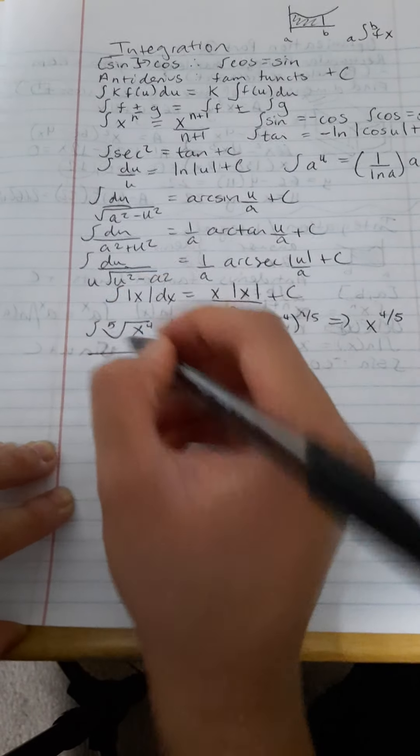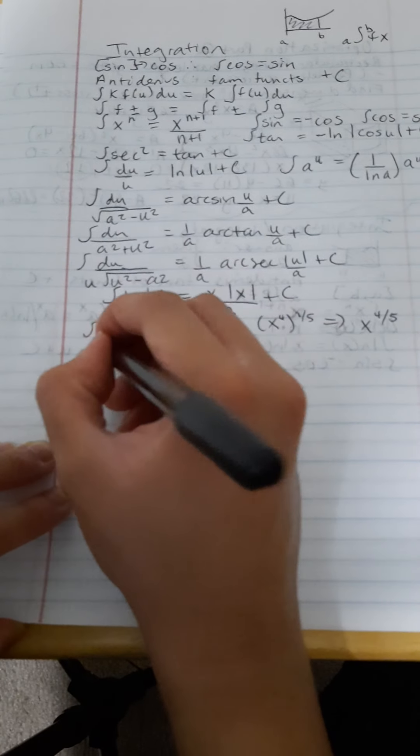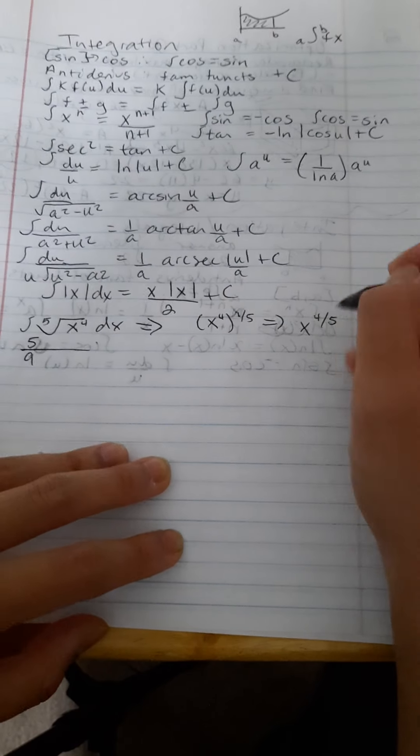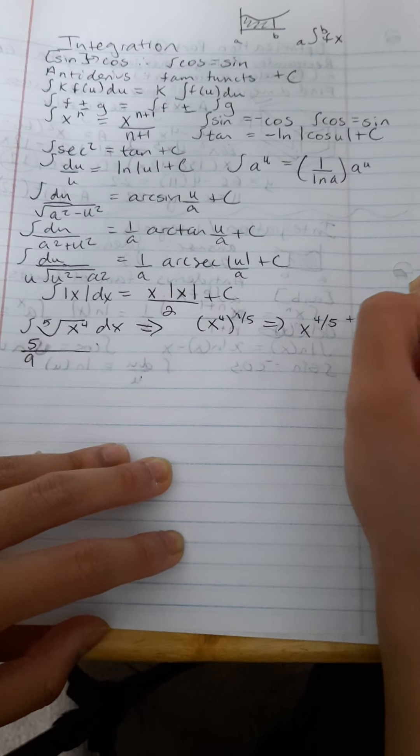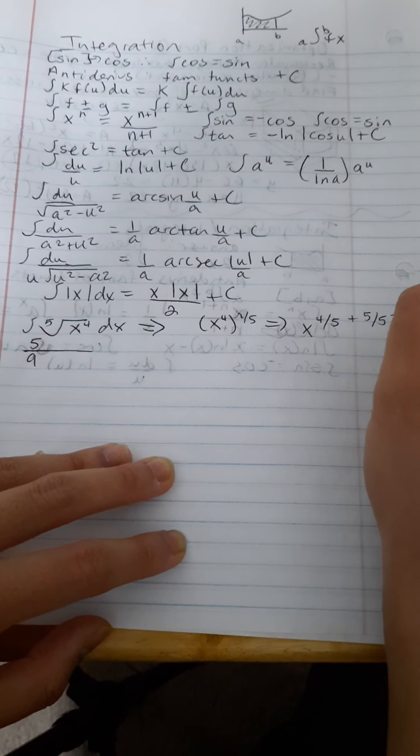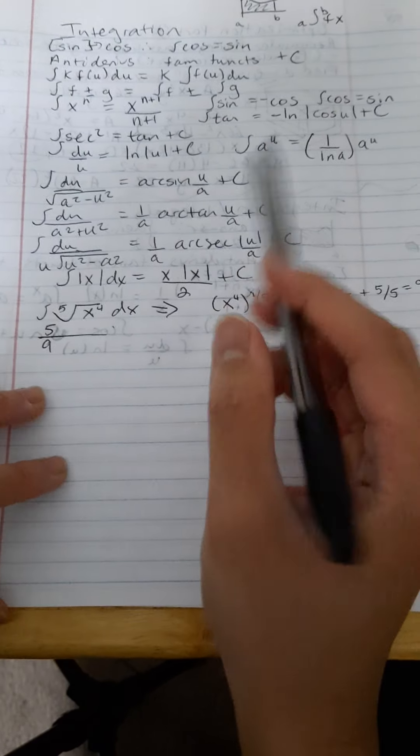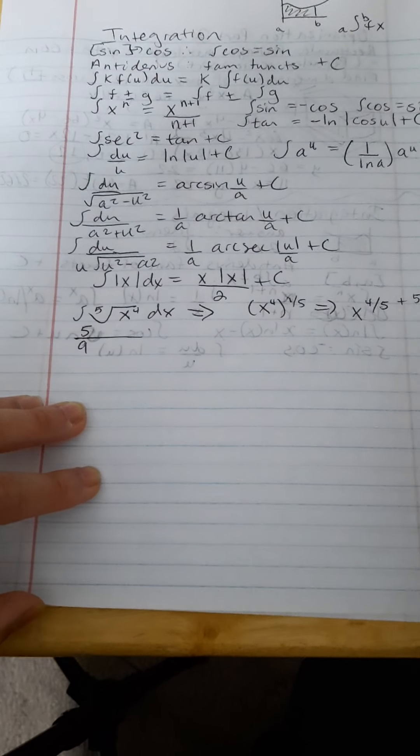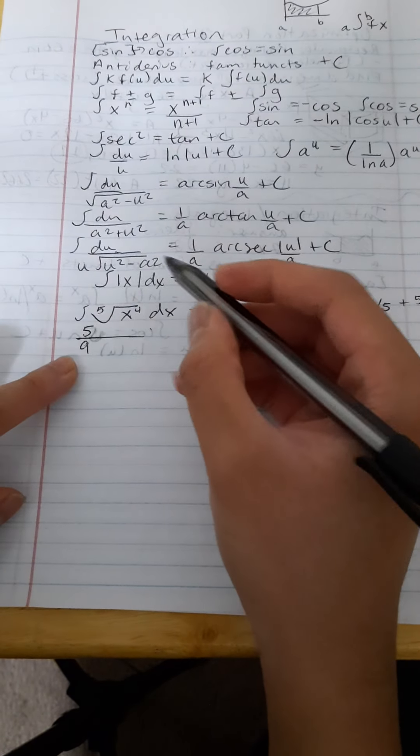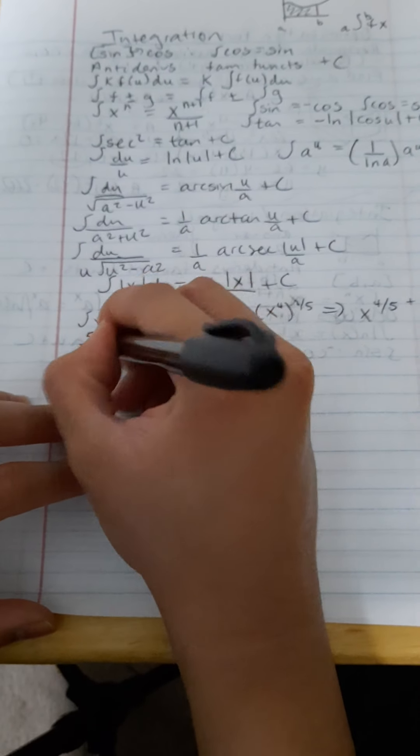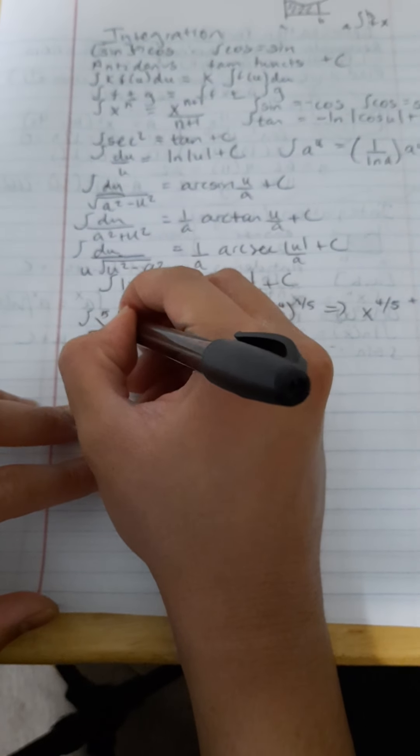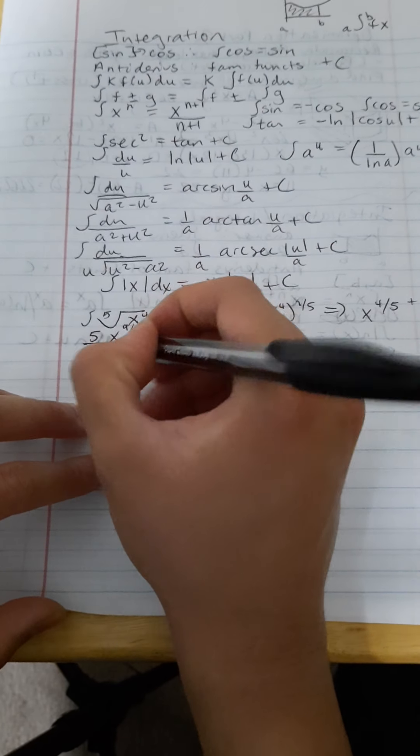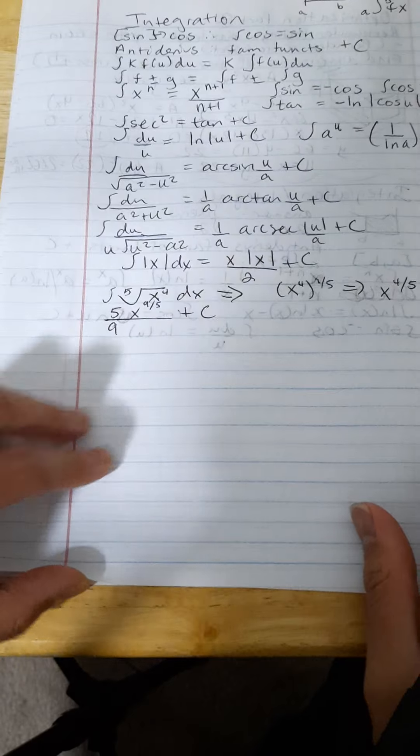and we're going to get 5/9ths. Because we're going to put that, we're going to add 1 here, but 1 is 5/5ths, so it would be actually 9/5ths. But then, once we're dividing from that new number because of the n plus 1 in the denominator, we're going to flip this fraction, so that's why it's 5/9ths and not 9/5ths. 5/9ths x to the 9/5th power and plus c at the end, and we're good to go with that one.